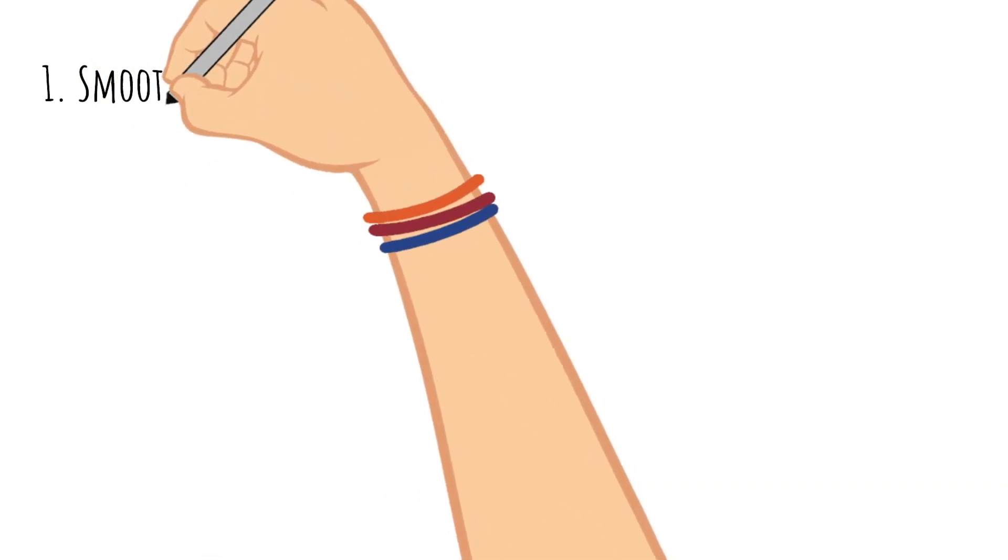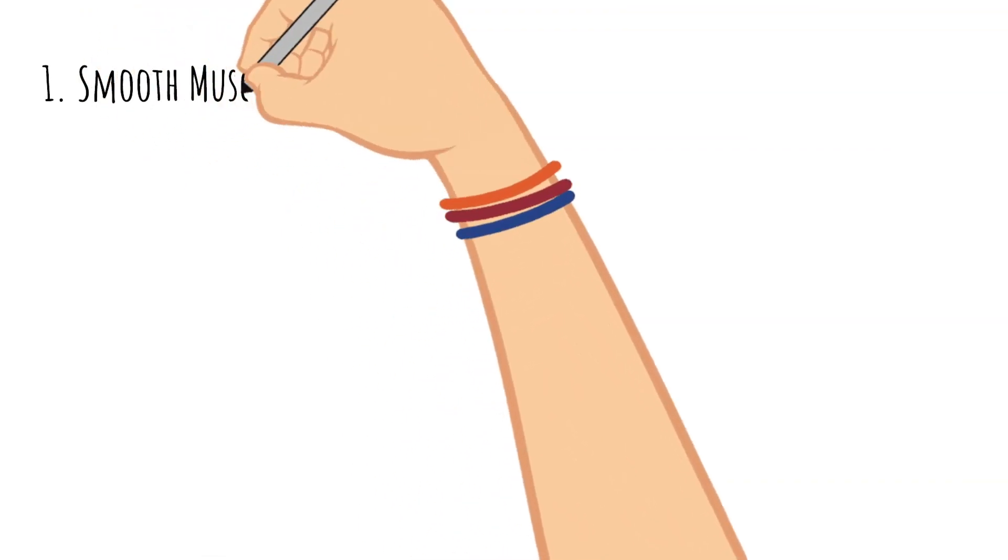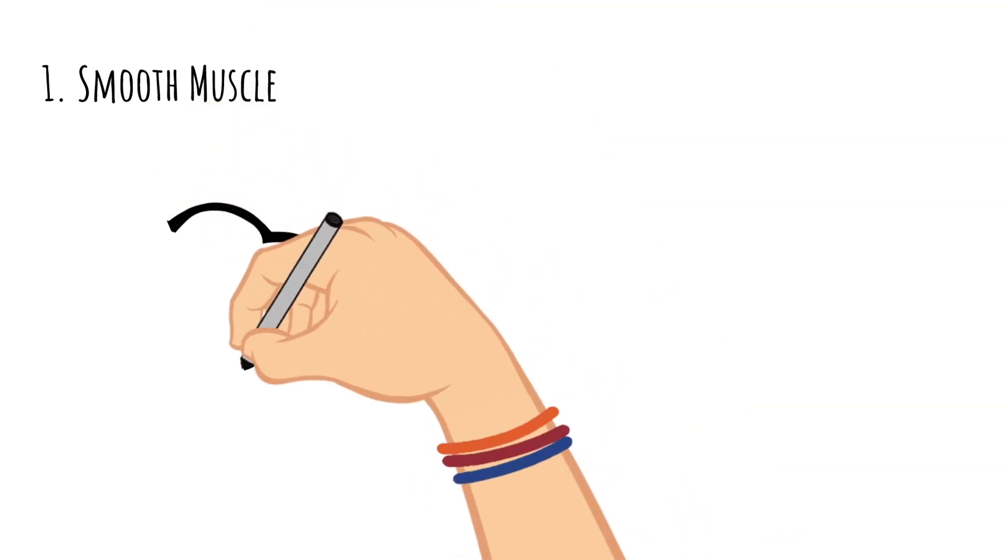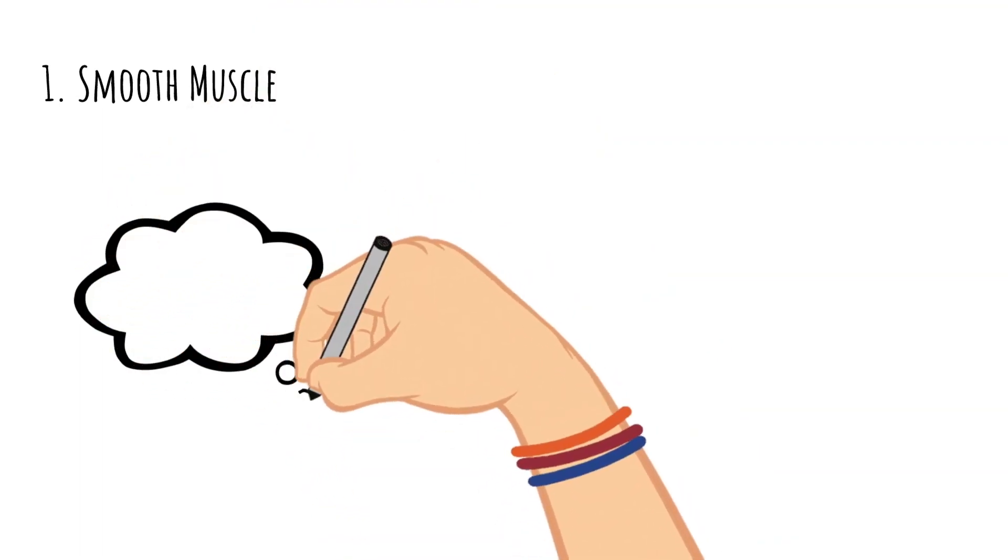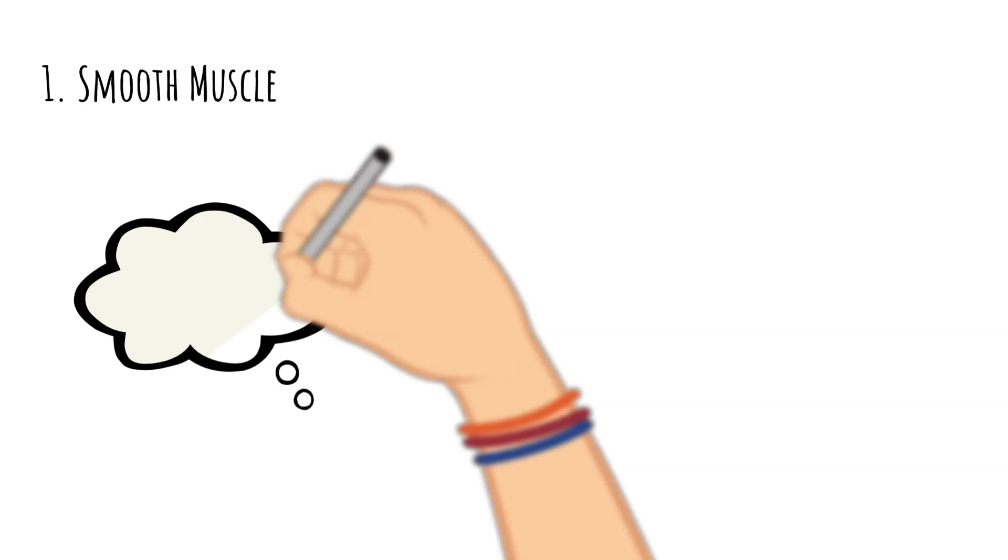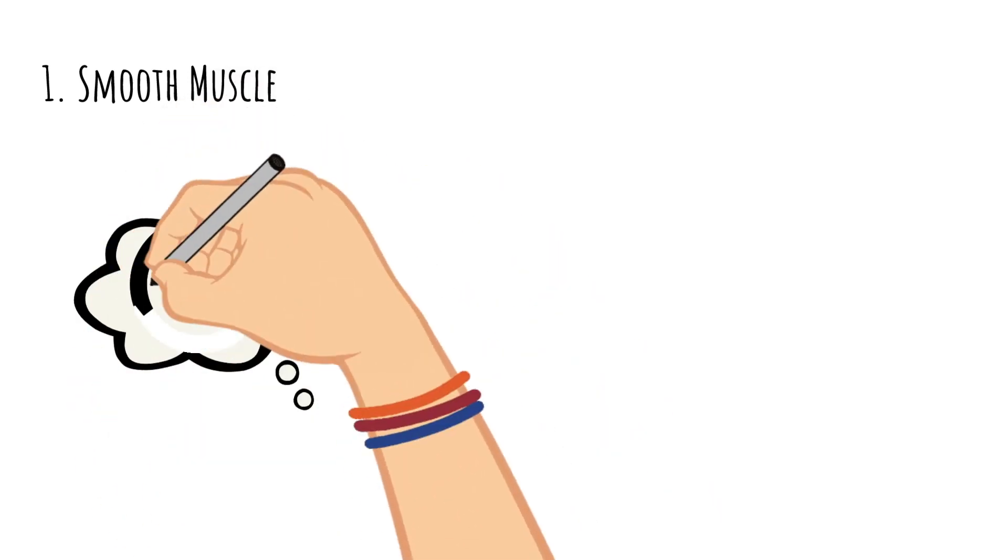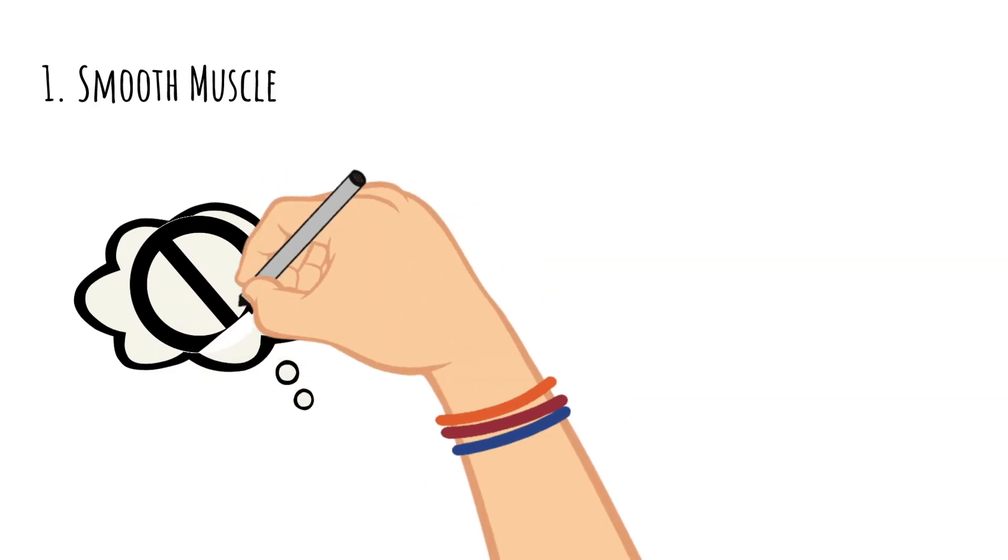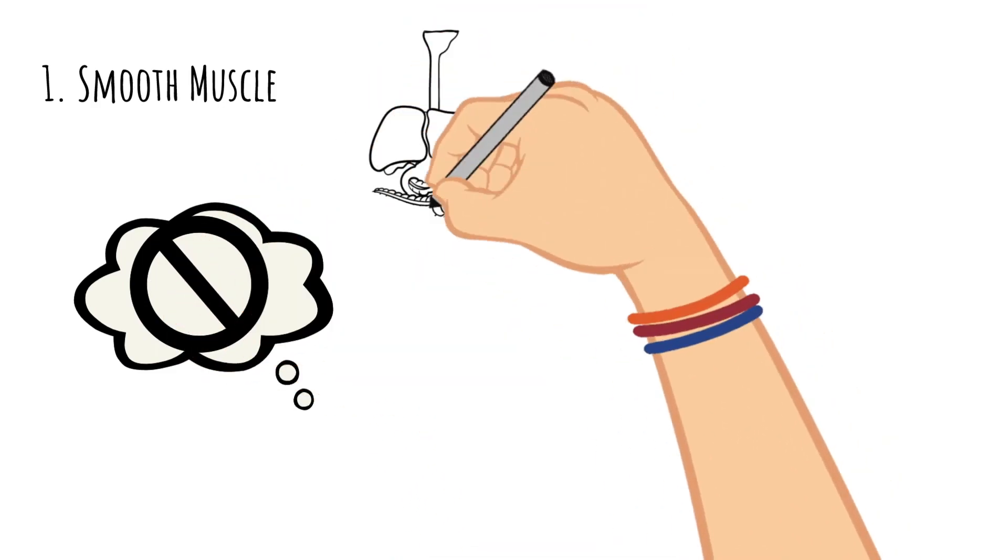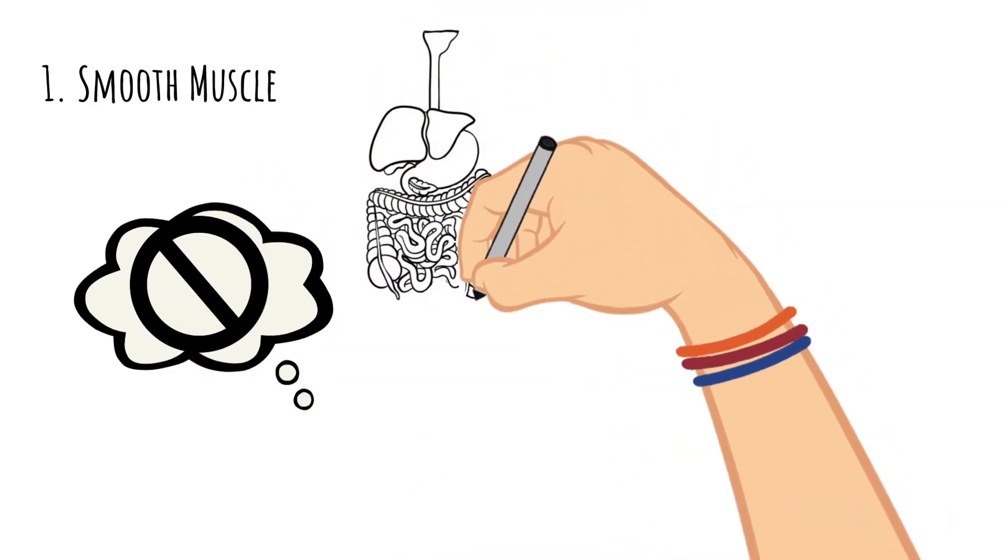Let's look at the first type. Smooth muscles are some of the involuntary muscles that we just talked about, and remember that means you can't think to control them. Smooth muscles are at work all over your body.